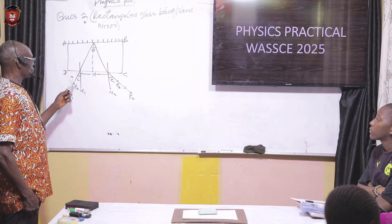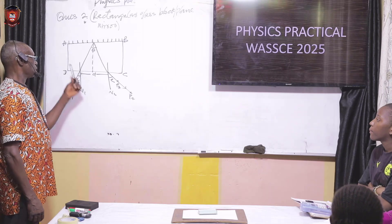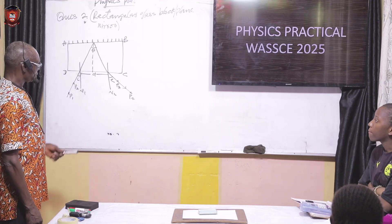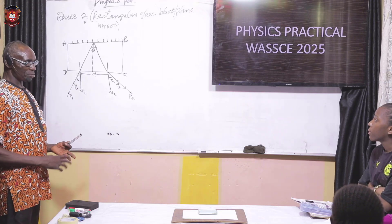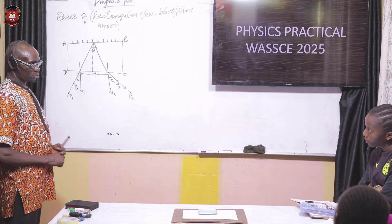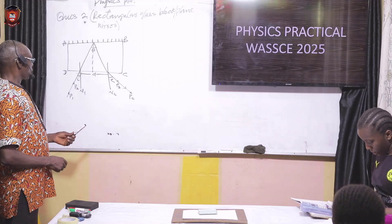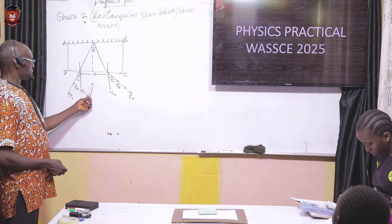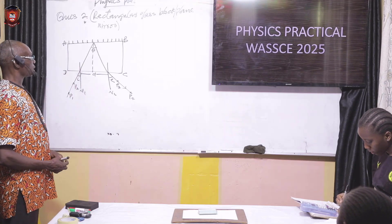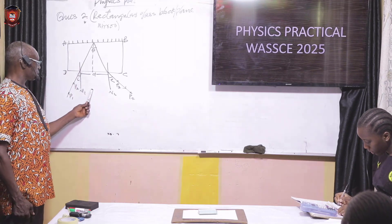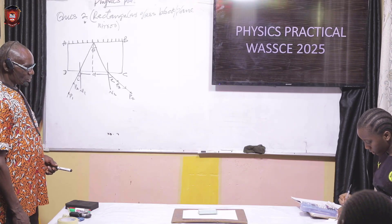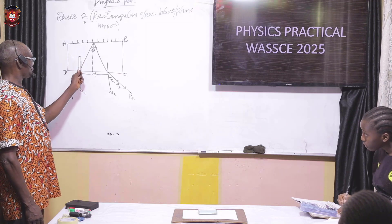Based on the law of refraction and reflection, this is exactly what you obtain from the combination of the plain mirror and the rectangular glass prism. This is exactly what we're expecting in question two, with the presence of the plain mirror.